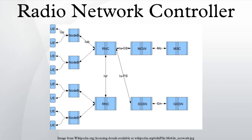IuB, IU, and IuR protocols all carry both user data and signaling. The signaling protocol responsible for the control of the Node-B by the RNC is called NBAP.